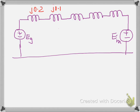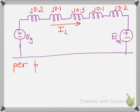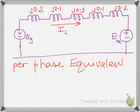Then comes line L1 with J·0.3 per unit, then transformer T2 with J·0.1 per unit, and then the motor with J·0.2 per unit, followed by source EM. That is the complete per-phase equivalent positive sequence network.